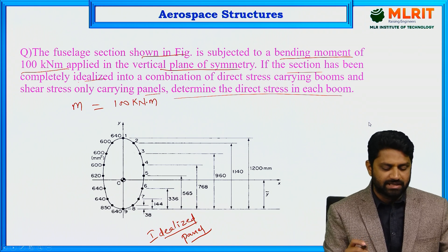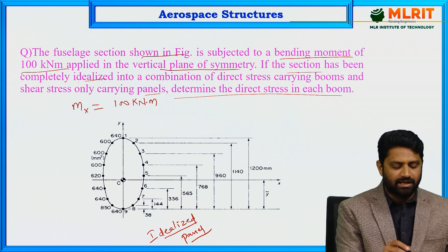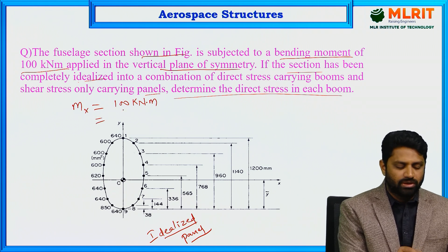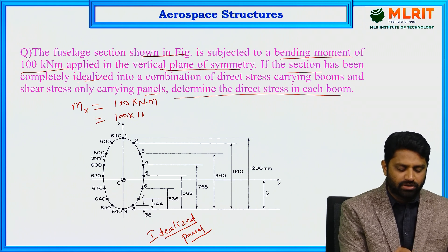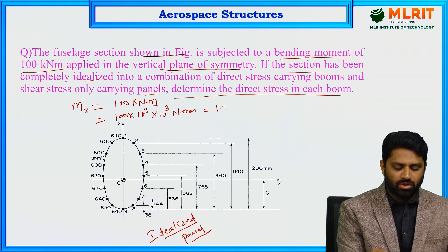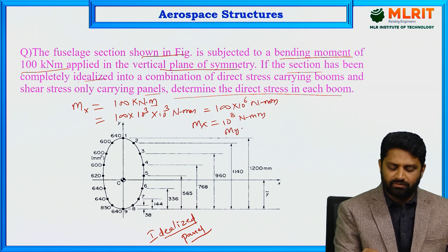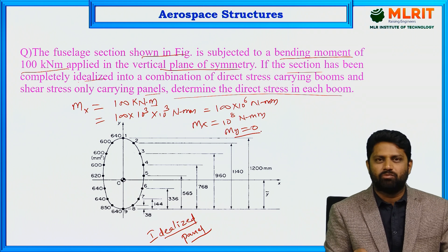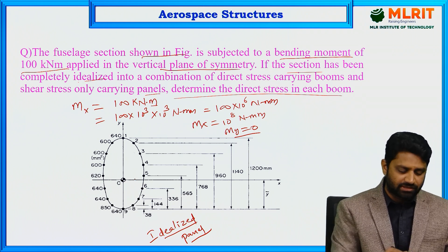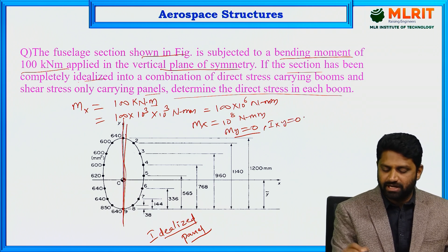The bending moment is applied in the vertical plane of symmetry, so MX equals 100 kilo Newton meter. Converting to Newton millimeters: 100 × 10³ (kilo) × 10³ (meter to mm) gives MX = 100 × 10⁶ N·mm, or 10⁸ N·mm. Since no bending moment in the Y plane is given, MY = 0. Also, since the fuselage section has a vertical axis of symmetry, the product of inertia IXY = 0.